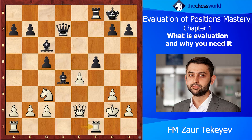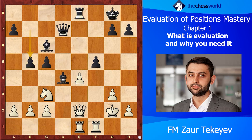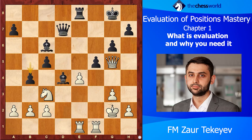Nunn played another great move — b5, a brilliant solution! The idea is b4 is coming, and then you take on e4 without any immediate exchanges, since taking on e4 immediately would spoil the advantage. So b5 was just a great move, and now we can see how the game continued — nothing really critical left for us to analyze.